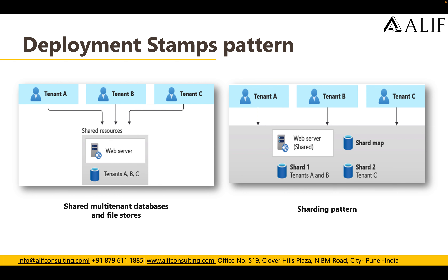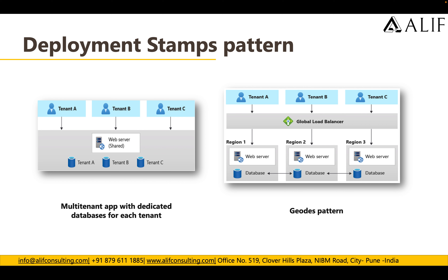There are four ways to implement deployment stamp patterns. The first is a shared multi-tenant database and file store, where you have shared resources — a shared web server and a shared database hosting information for multiple tenants. The second is the sharding pattern, where the web server is shared for all clients, but in the backend, databases are split — one or two customers on one database, the rest on another.